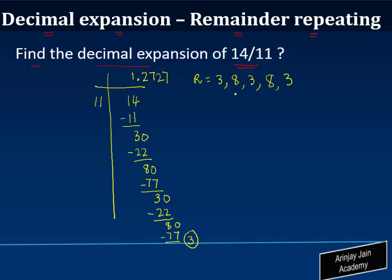So what I am noticing here is that every time I do this I am getting 3 and 8 as a remainder repeatedly. So basically my remainders, a set of remainders, have actually started repeating.